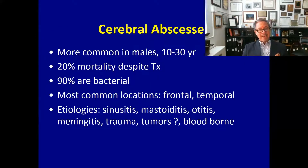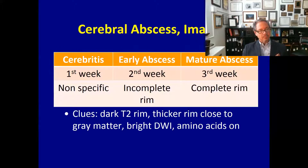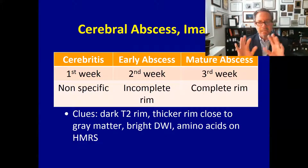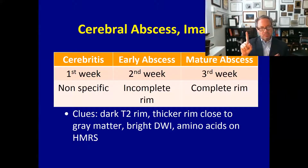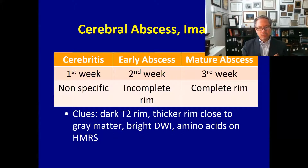Now let's talk about intracerebral infections associated with meningitis — specifically abscesses, which are more common in young males. Mortality is very high, up to 20% despite treatment. Nearly all are pyogenic and most are located in the frontal and temporal regions of the brain. They may arise from hematogenous spread or as a complication from parameningeal foci such as sinusitis and mastoiditis. Imaging findings change according to the stage: in the first week there is nonspecific cerebritis with high T2 signal and patchy enhancement; in the second week an incomplete rim of enhancement forms; in the third week a mature abscess develops with a complete rim of enhancement.